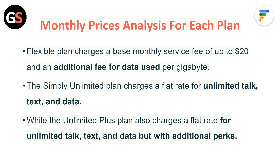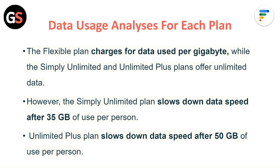For data usage analysis: the flexible plan charges for data used per gigabyte, while the Simply Unlimited and Unlimited Plus plans offer unlimited data. However, the Simply Unlimited plan slows down data speed after 35 GB of use per person, and the Unlimited Plus plan slows down data speed after 50 GB of use per person.